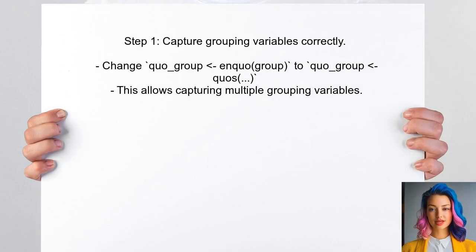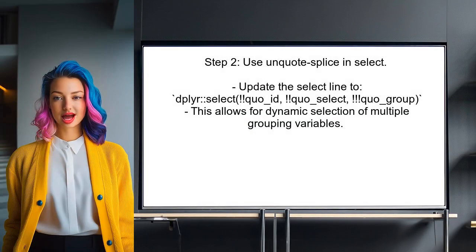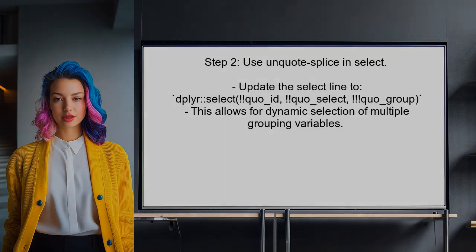To address the user's issue with grouping by multiple variables, we need to modify the function to correctly handle the grouping arguments. First, the user should ensure that the grouping variables are captured using the cross function. Next, the user should ensure that the select function uses the unquote splice operator correctly. This will allow the function to select multiple grouping variables dynamically.